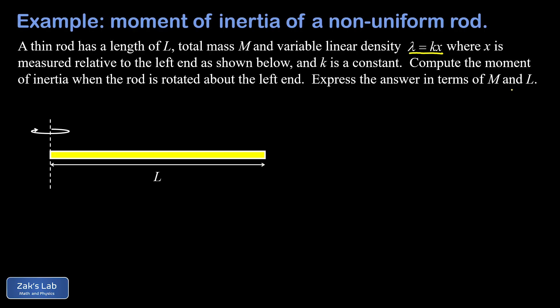So before we get started, just a quick reminder of linear density. Again, we normally give that the lowercase Greek letter lambda, and that's the mass per unit length. So the units of linear density would be kilograms per meter.